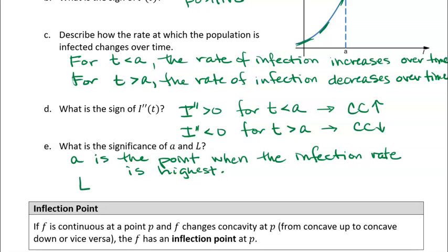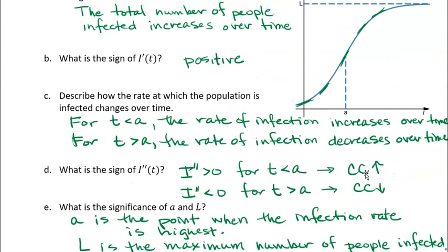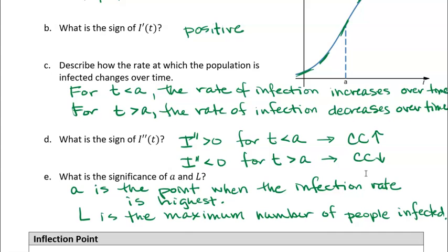What is L? L is that limit — there's a horizontal asymptote at L. It's the maximum value: the number of people infected doesn't get any higher than that. Over time, the number of people infected reaches that maximum and doesn't go higher, which makes sense because there are only so many people in a population.